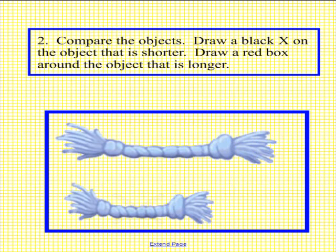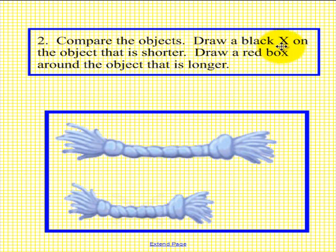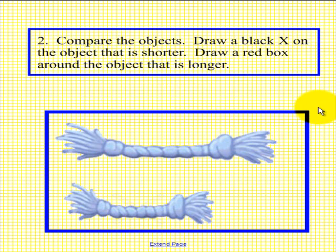We should have a new student up at the Smart Board. What we would like for you to do is compare the objects below. When told to, draw a black X on the object that is shorter, and then draw a red box around the object that is longer. If you would please pick up a pen to do that now. When done, place the pen back in the tray.